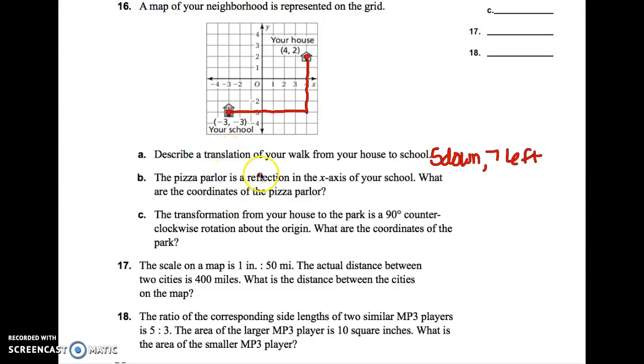Now, part B says, the pizza parlor is a reflection in the x-axis of your school. What are the coordinates of the pizza parlor? So, if it's a reflection of the x-axis, your x-axis is the horizontal axis right here. So, we have to reflect over that line. So, we're talking about your school. So, if you notice, your school is 1, 2, 3 below the line. So, whenever we reflect, we're going to go 1, 2, 3 above the line. So, I want you to put a dot right there and label it pizza. But, they want to know the coordinates. So, that would be at negative 3, positive 3. Make sure you put those in parentheses.